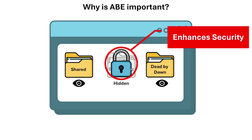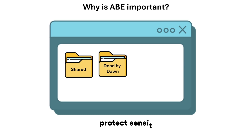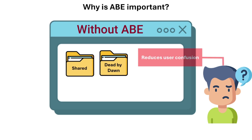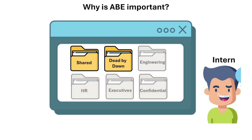Why is ABE important? First, it enhances security. Access-based enumeration prevents users from even knowing certain folders exist if they don't have the required permissions. This reduces the risk of unauthorized access attempts and helps protect sensitive information. Next, it reduces user confusion — without ABE, users might see many folders they can't access, which can be frustrating, especially in environments with large shared drives.